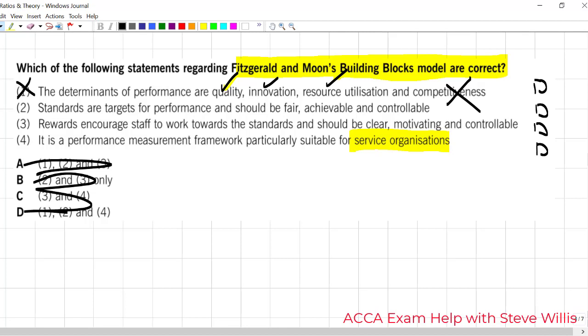Now, it's either two or three. Standards are targets for performance. I like that. And, they should be fair, achievable, and controllable. No no no. I like ownership there. They should be assigned to managers. So, I'm going to go with three and four. But, let's double check this. Rewards should be clear. That's the clarity, motivating, and controllable. So, the answer is three and four as the correct statements.